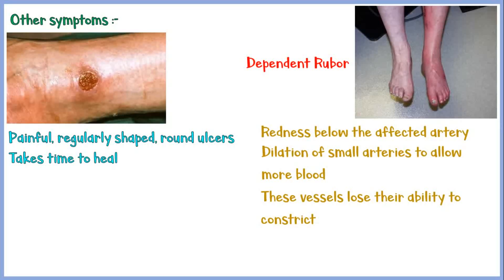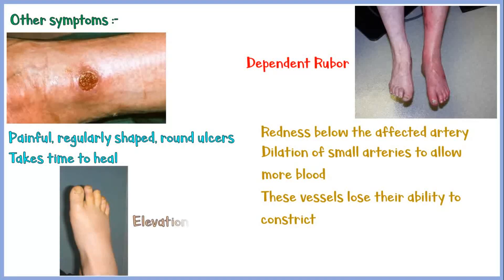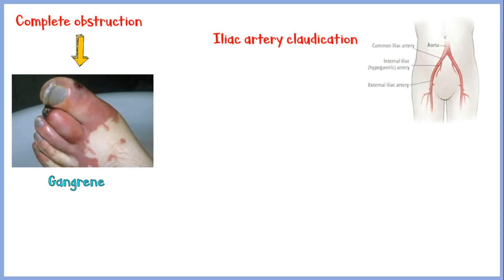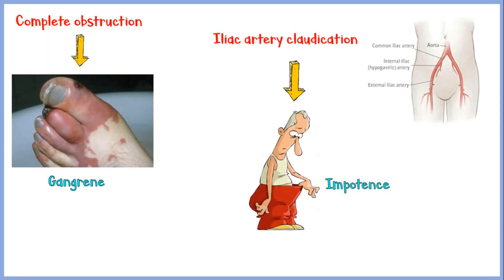Another feature of PVD is elevation pallor, which can be seen when the affected area is elevated against gravity. Since the vessel is already constricted, blood has a hard time reaching the affected area against gravity, resulting in pallor. Complete obstruction of an artery may cause gangrene of the affected area, and iliac artery claudication will result in impotence in males.